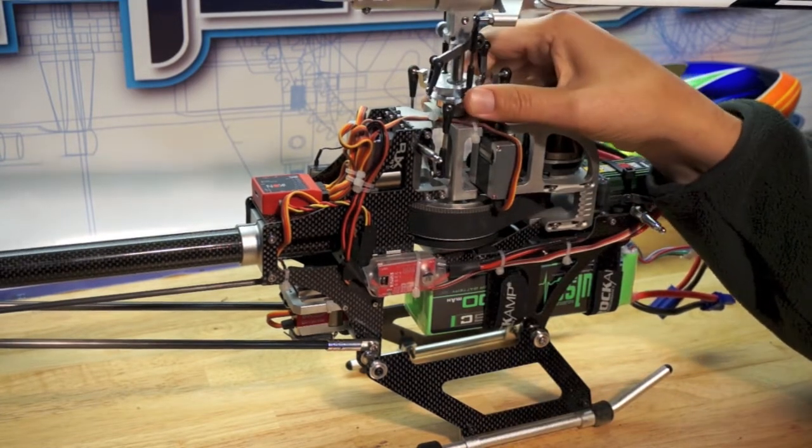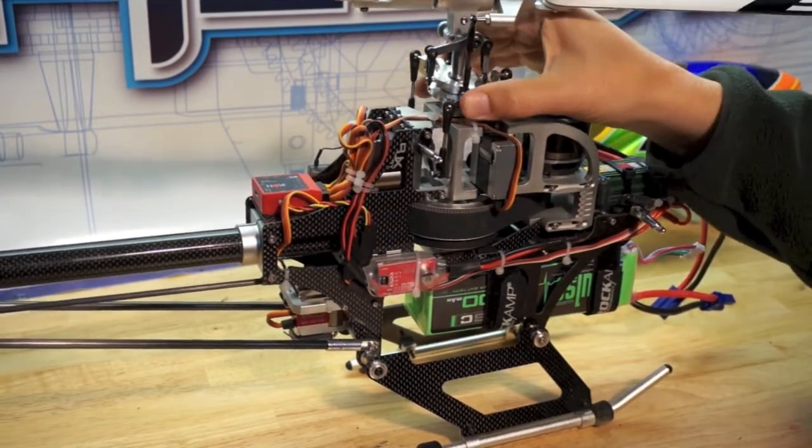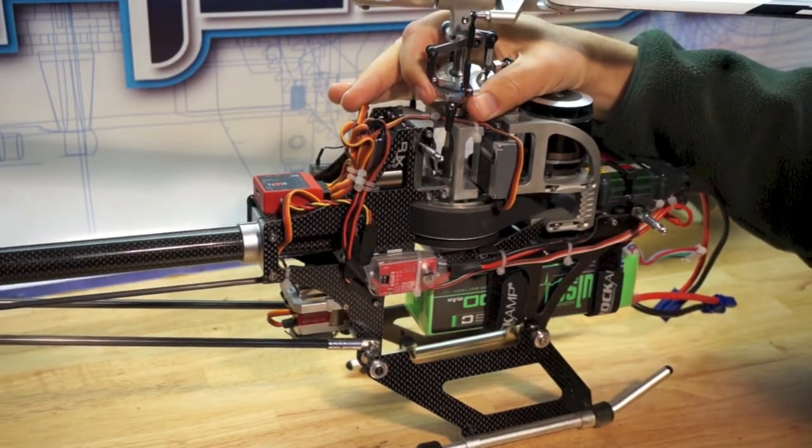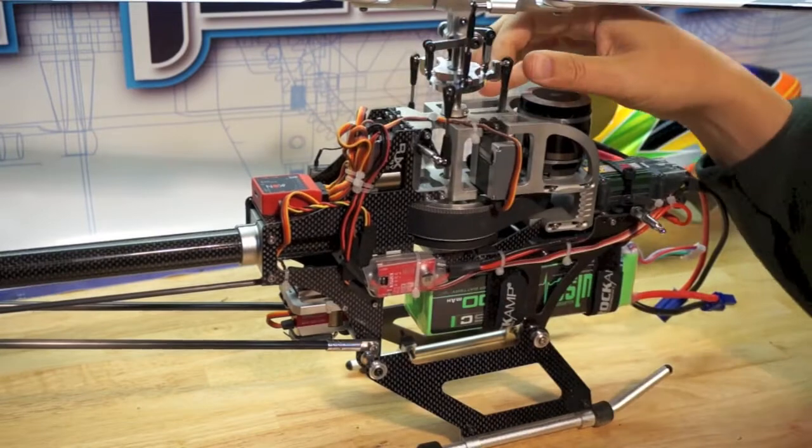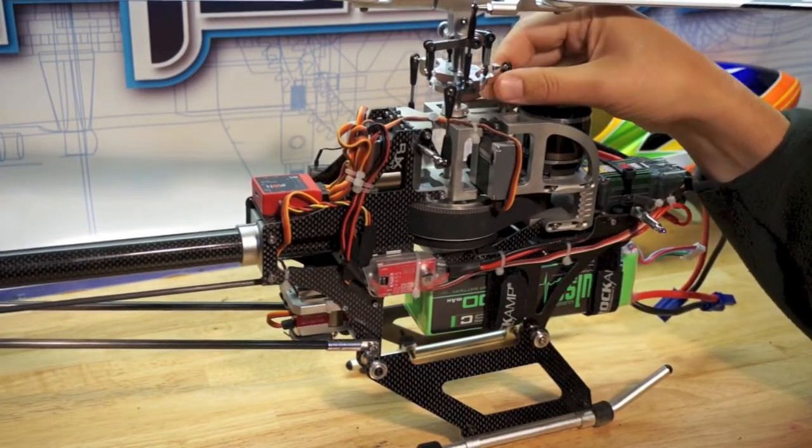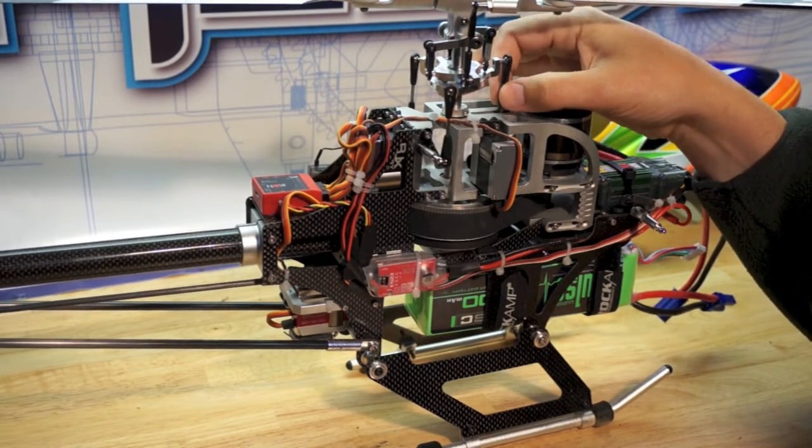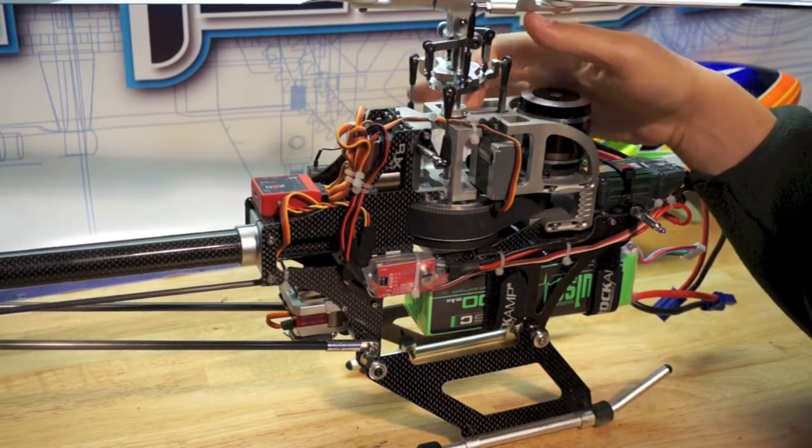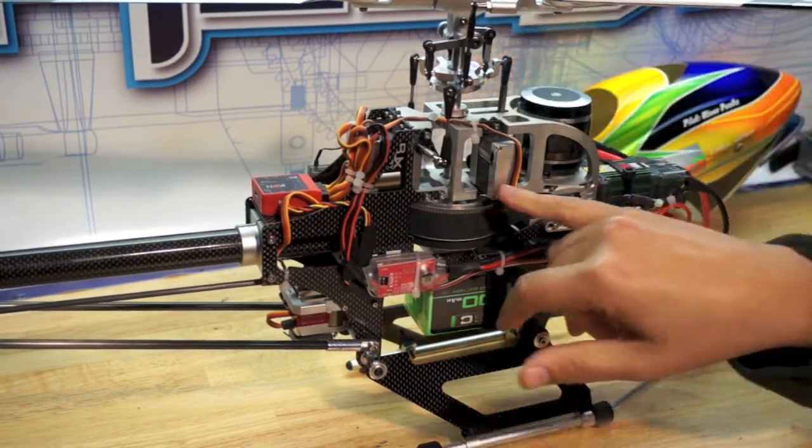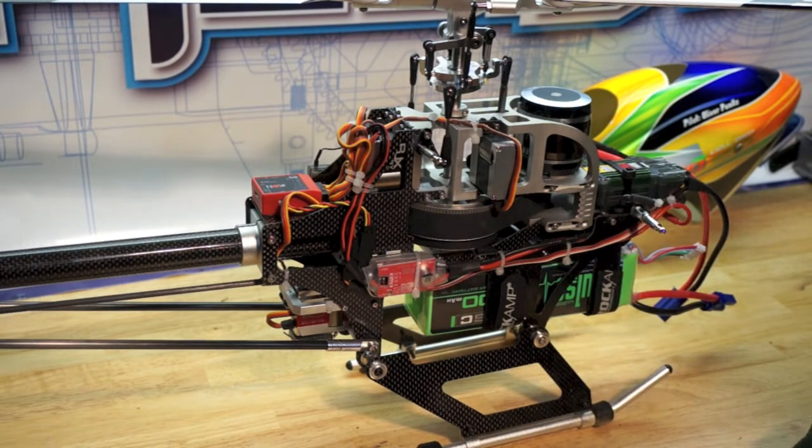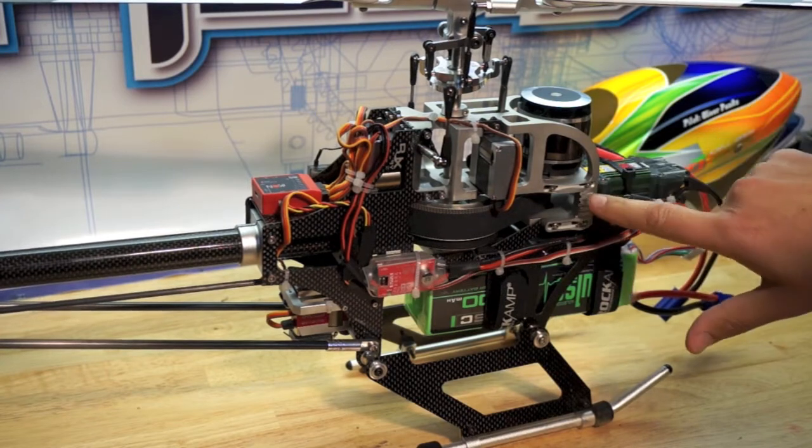The head is a traditional Swash-driven head. You see here, no DFC or anything like that. I know that they had an option, they showed it at IRCHA for a DFC style, but I don't know if that's being offered anymore. And then for the anti-rotation lock, there's a Delrin tube here that locks into the cell here, and it works really well. Then it connects up to your elevator servo.